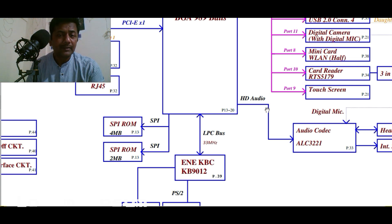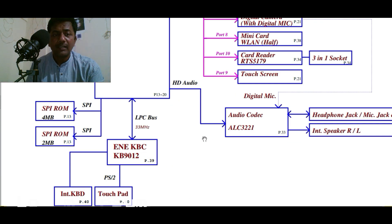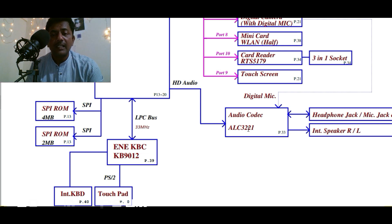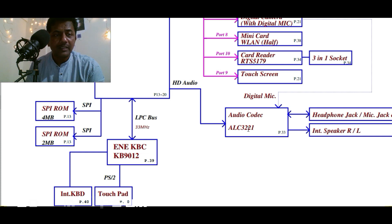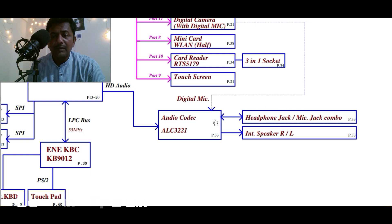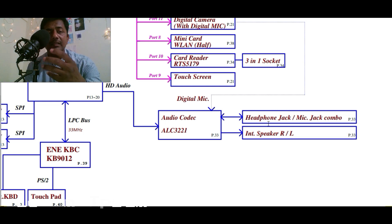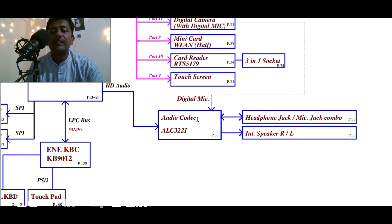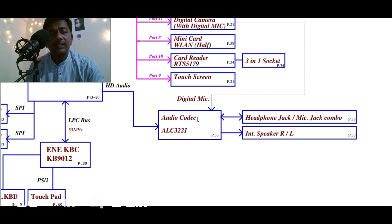The HD audio bus connects PCH to the codec. 'Codec' means code and decode. What this IC does — here the ALC three-double-two-one — is that the signals I am talking over the mic are called analog signals. This IC will first convert those analog signals to digital signals. This IC is connected bi-directionally to the headphone and mic jack combo, and the codec accepts the analog signal and converts it to digital signals.